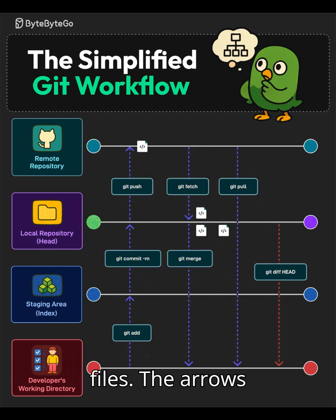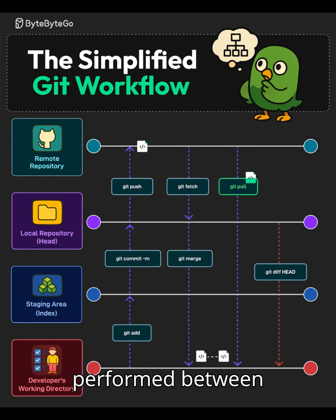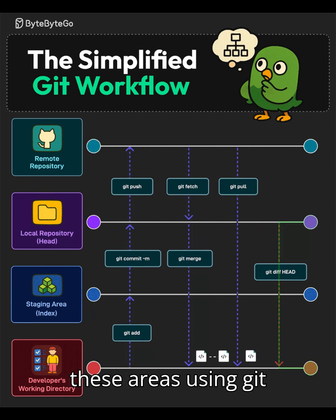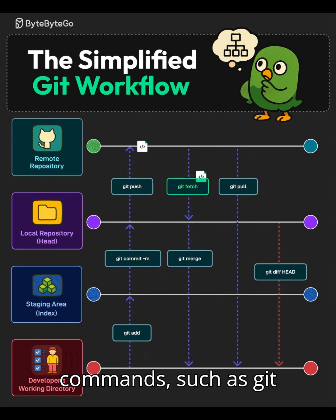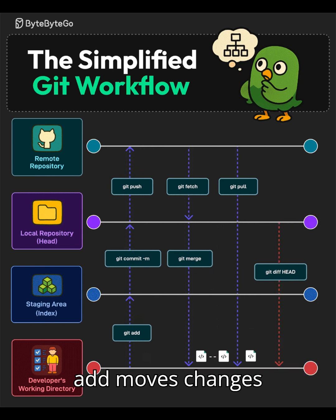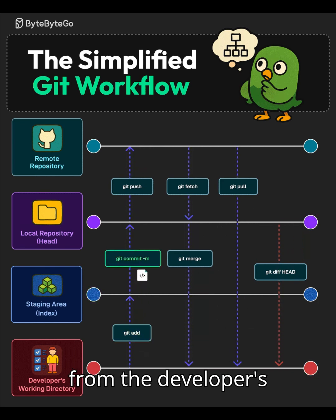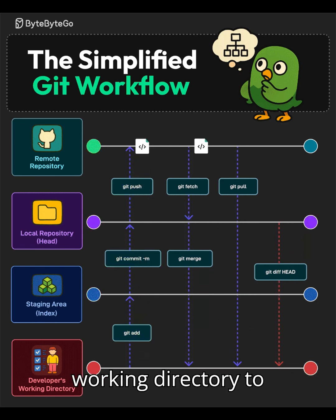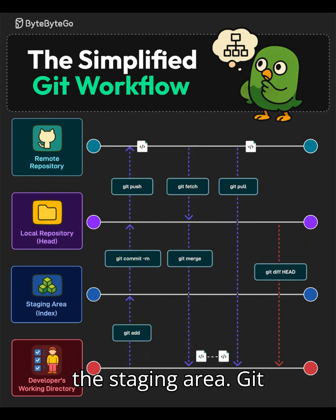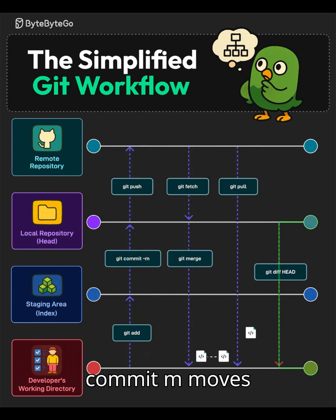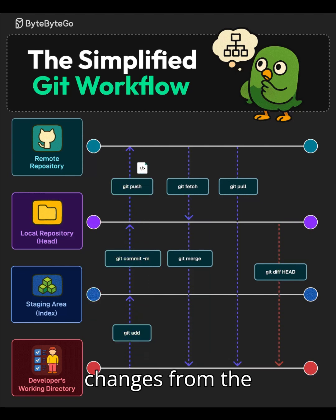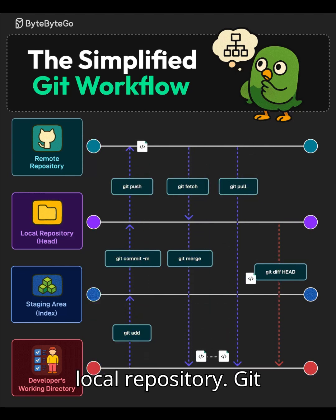The arrows indicate actions performed between these areas using Git commands. Git Add moves changes from the developer's working directory to the staging area. Git Commit moves changes from the staging area to the local repository.